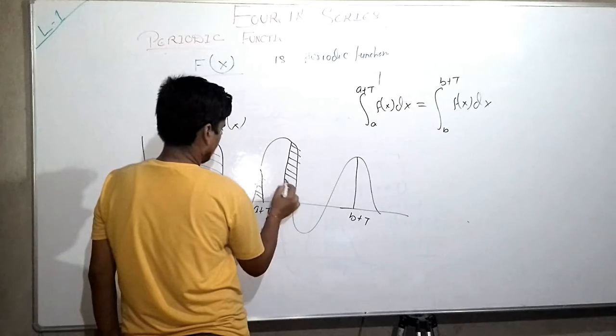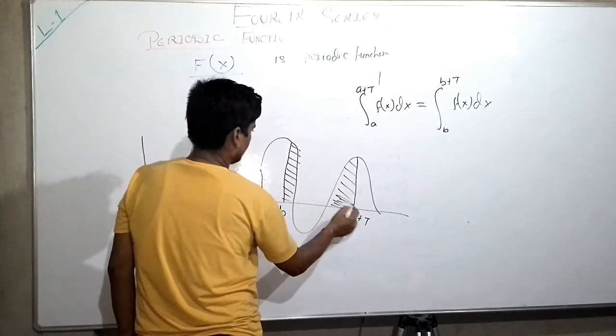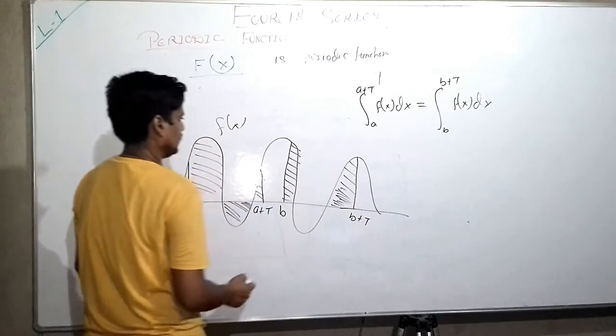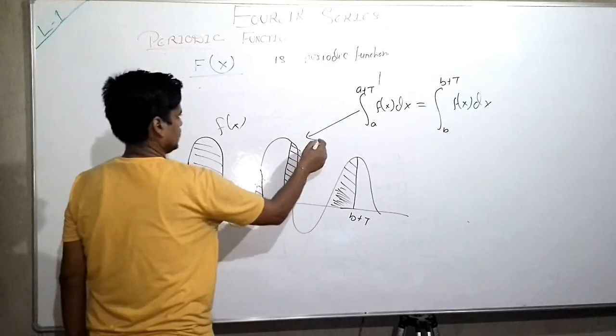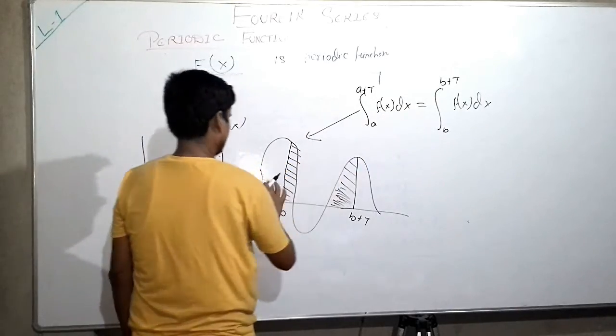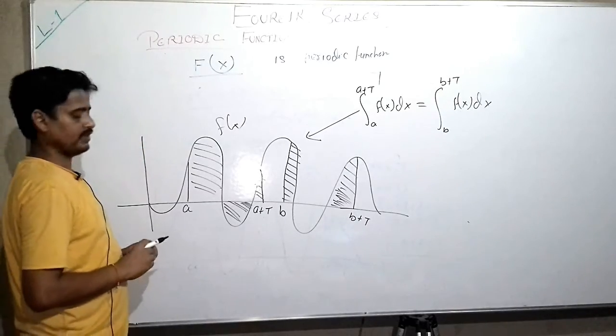Where T is the same length. So this implies this graph. So this is the brief definition of periodic function.